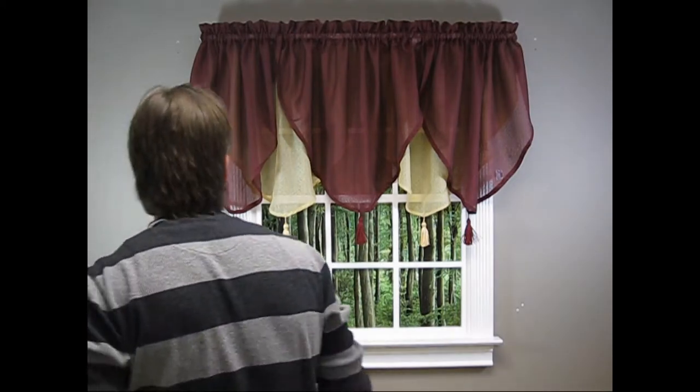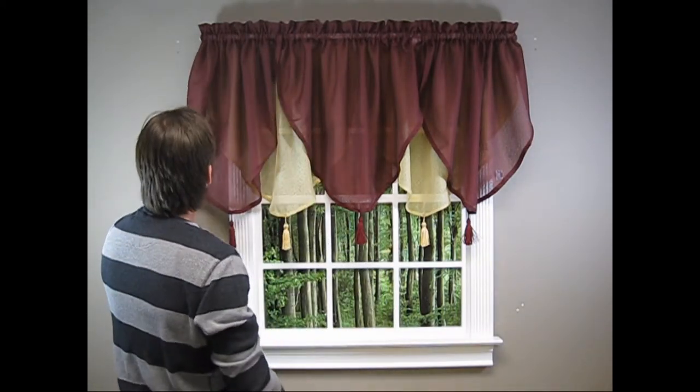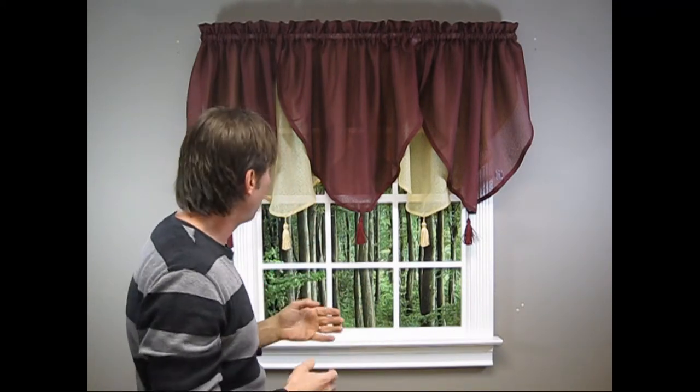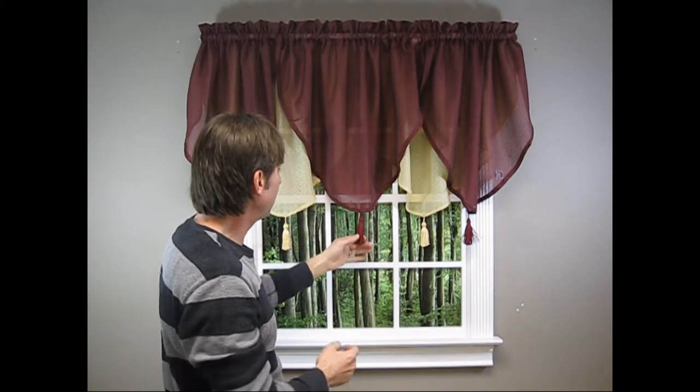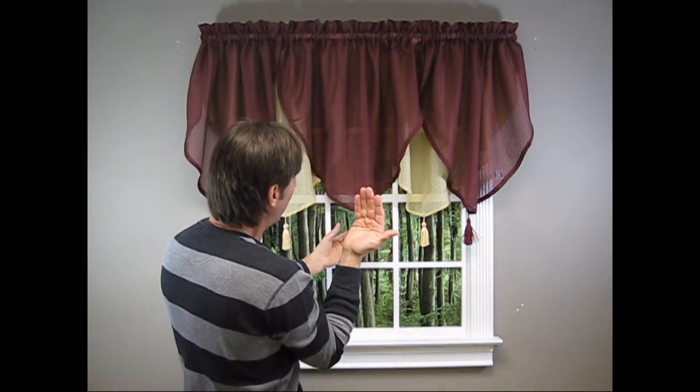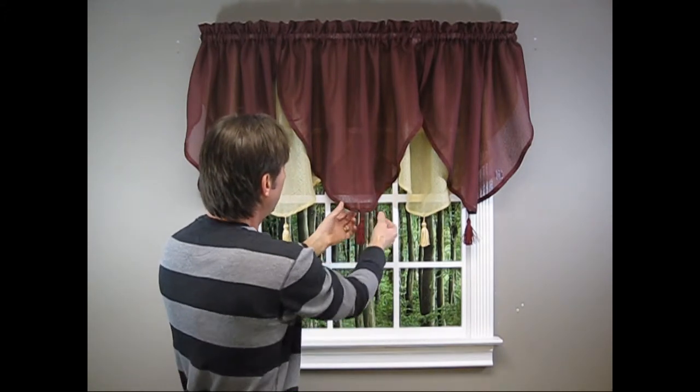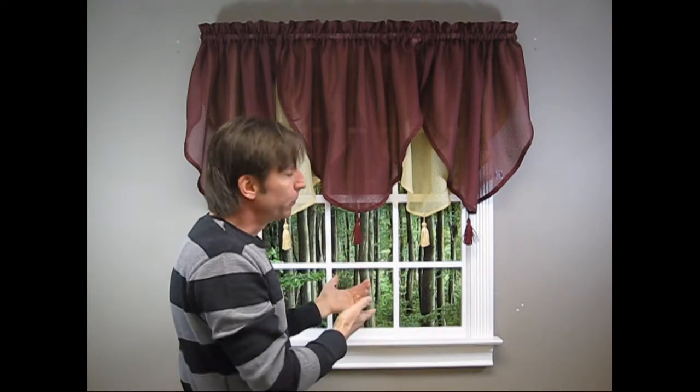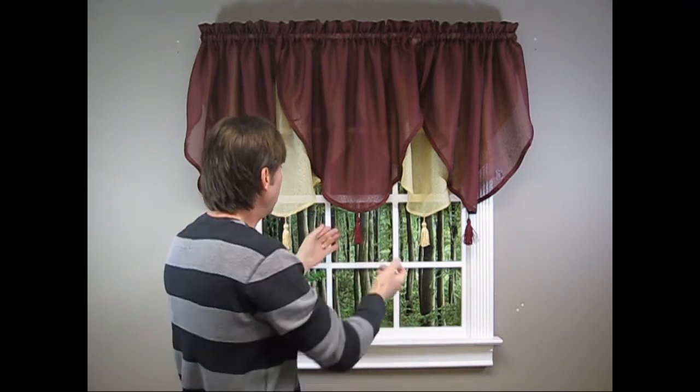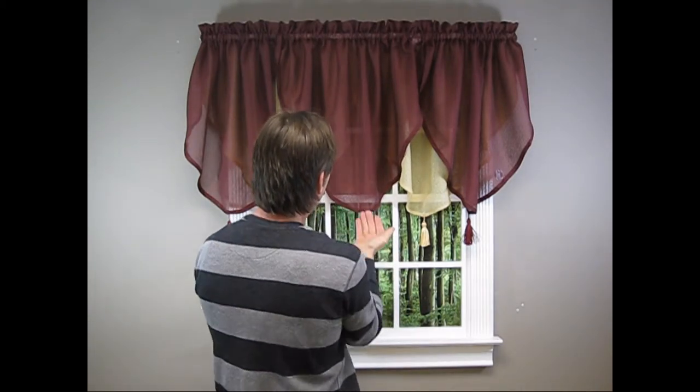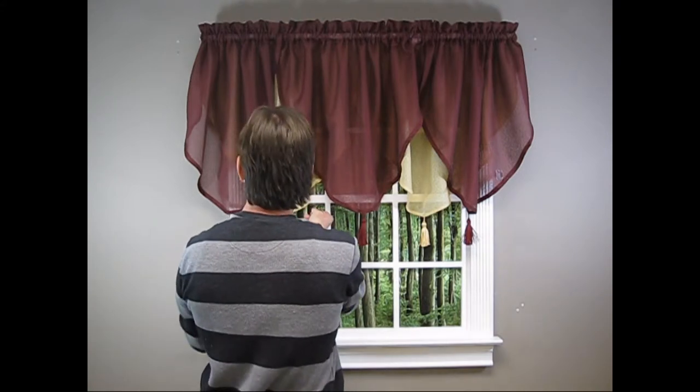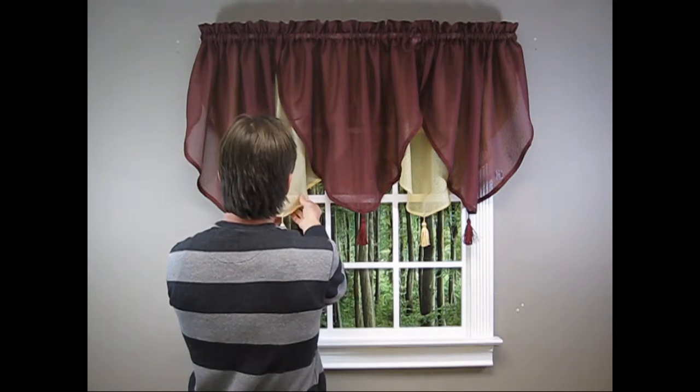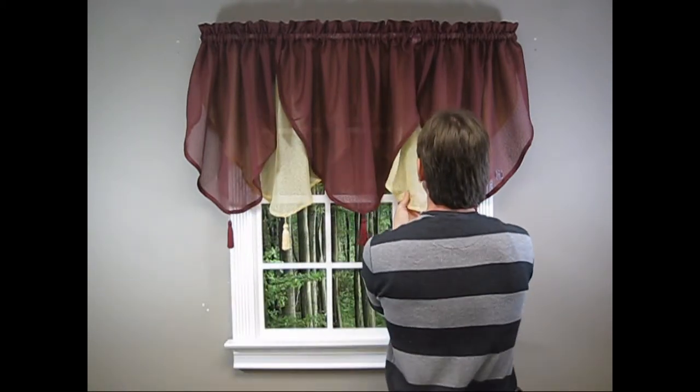Now that I have my five ascot valances hung on the rod, I'm just going to create some shape here. I like to install the ascot valances with the tassel out, away from the window, not in towards the window, but that's certainly preference. You can do it my way or the other way. I prefer the tassel to be closer—seems to me it just gives it body and texture when it's installed this way.